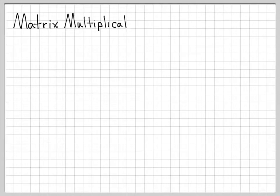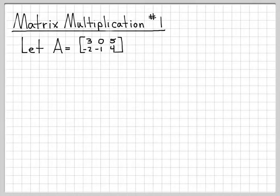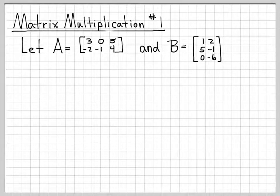In this example, we're going to look at matrix multiplication. We're going to work with two matrices, matrix A, which is defined like this, and matrix B, which is defined like this. So A is a two row by three column matrix, and B is a three row by two column matrix.